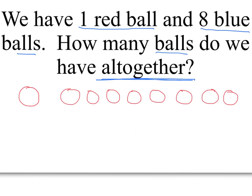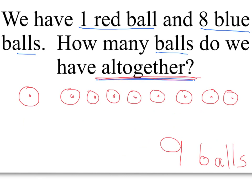The question asks: How many balls do we have all together? All together, we have one, two, three, four, five, six, seven, eight, nine. Nine, and my label is — what have we been talking about? Balls. All together. I'm still missing the number sentence, so let's go back and write our addition sentence: I started with one red ball plus eight blue balls equals nine balls. Great job.